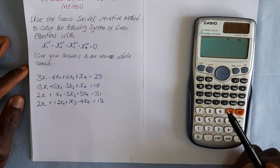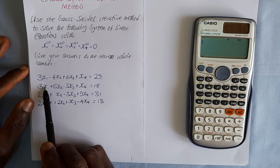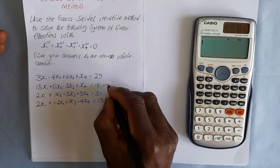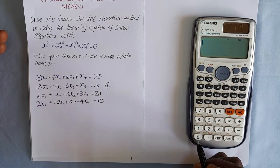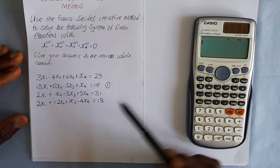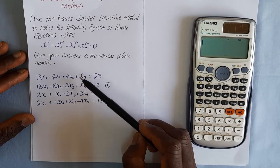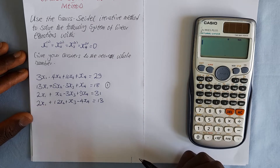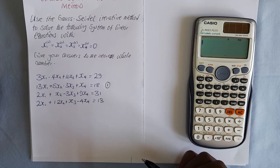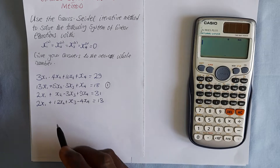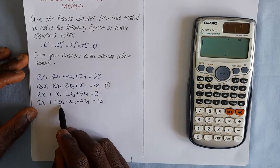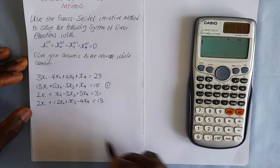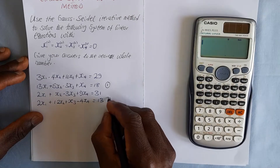Checking column 1, we can see that 13 is the highest coefficient, so we name that equation as our equation 1. We then check column 2 from the remaining equations and find the equation with the highest coefficient in column 2, so we take it as our equation 2.